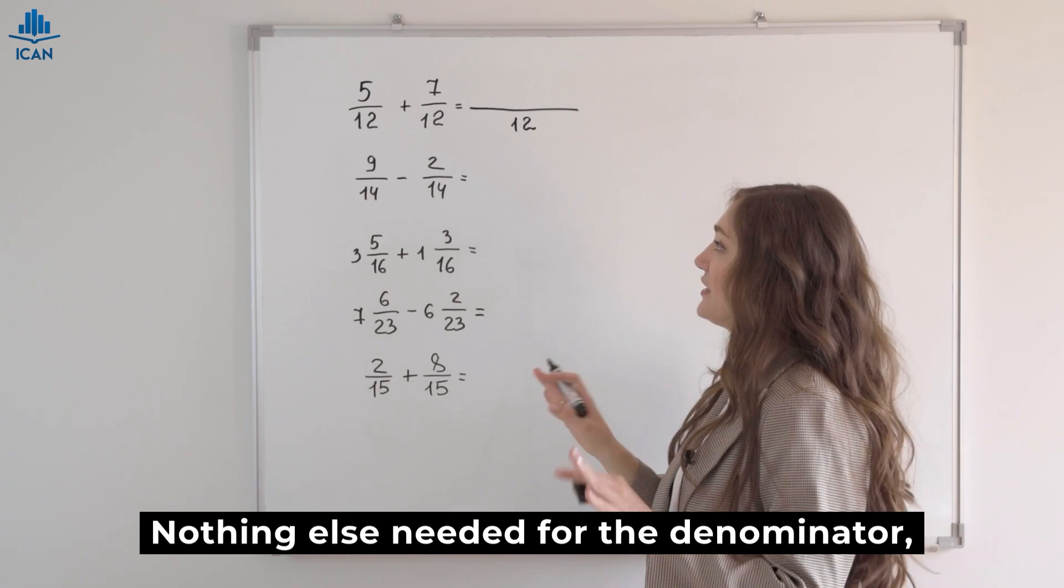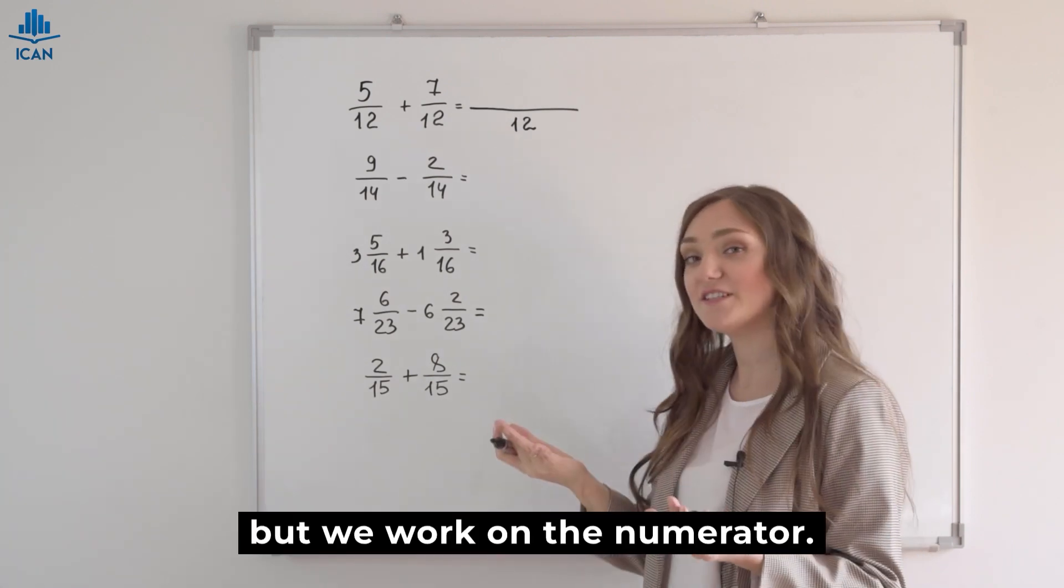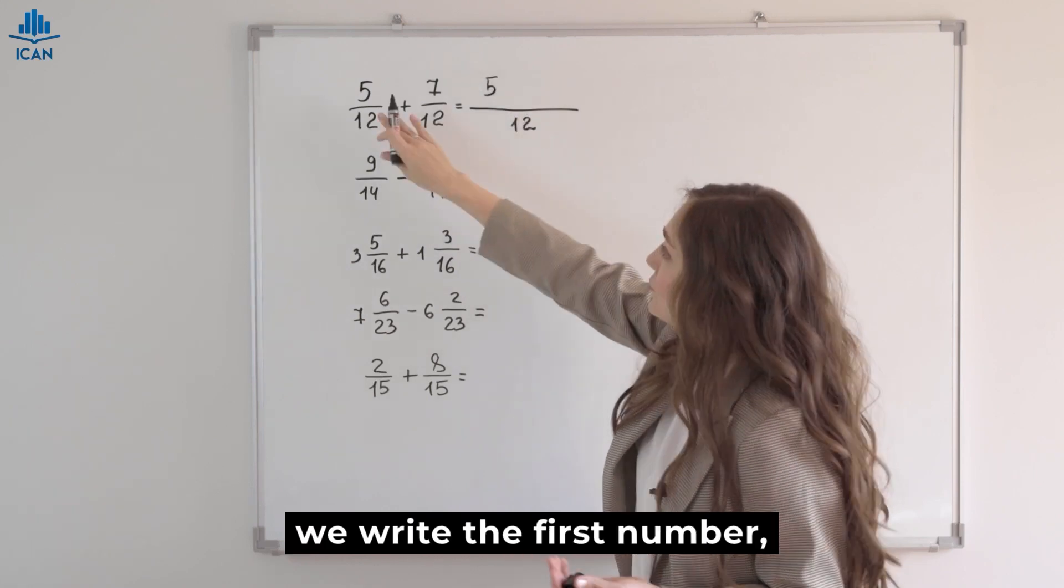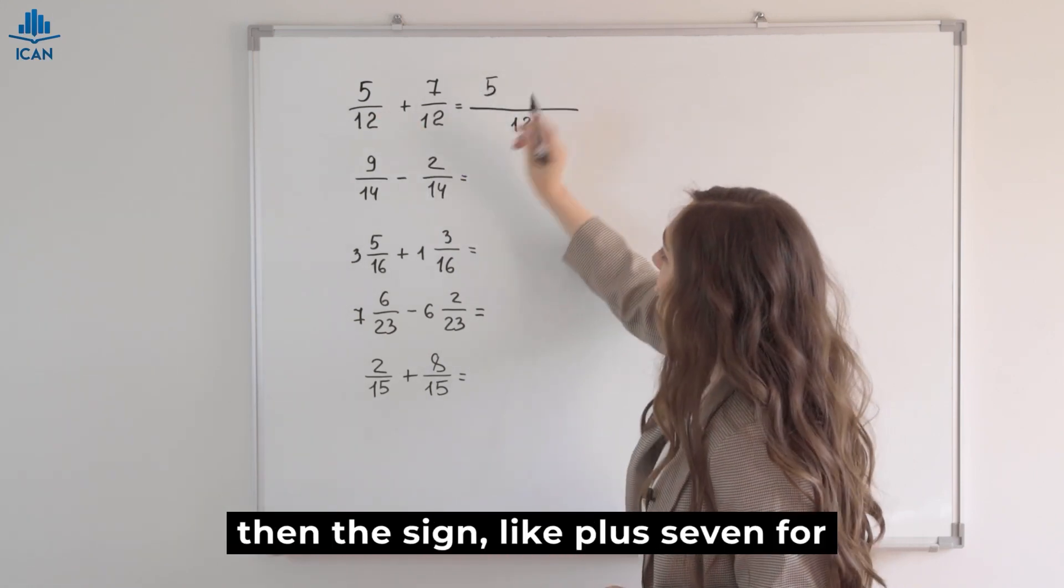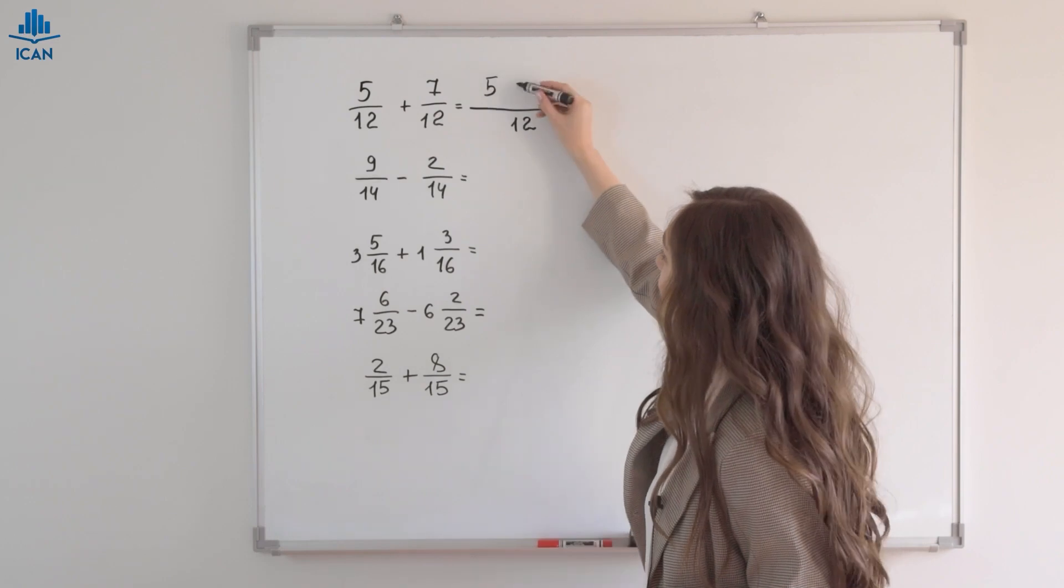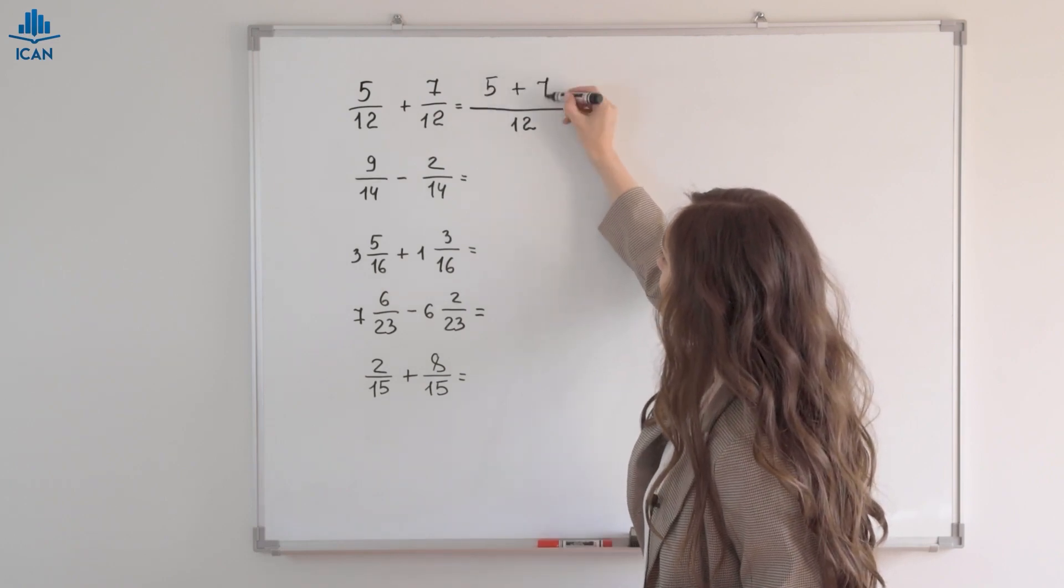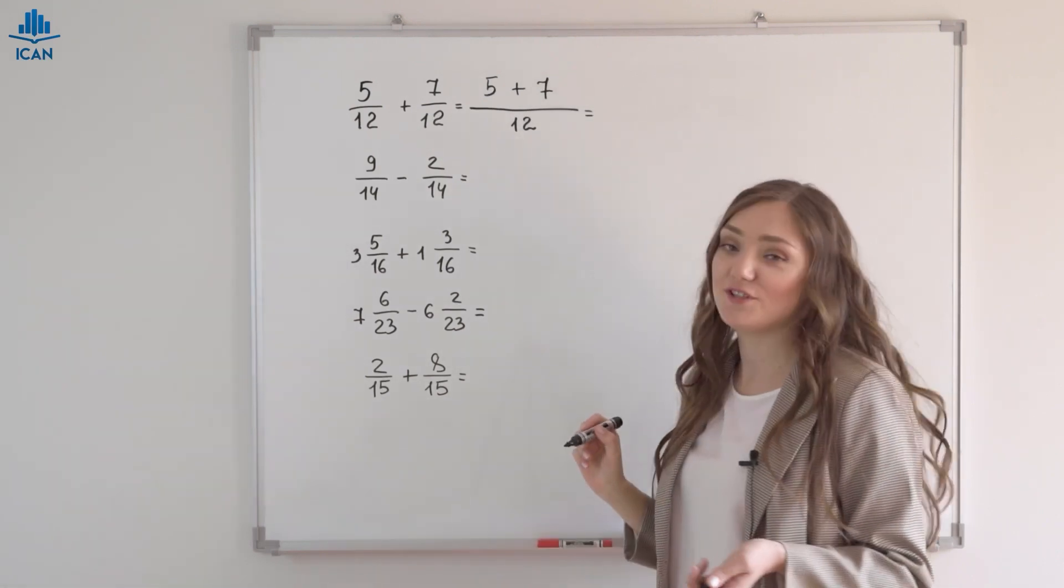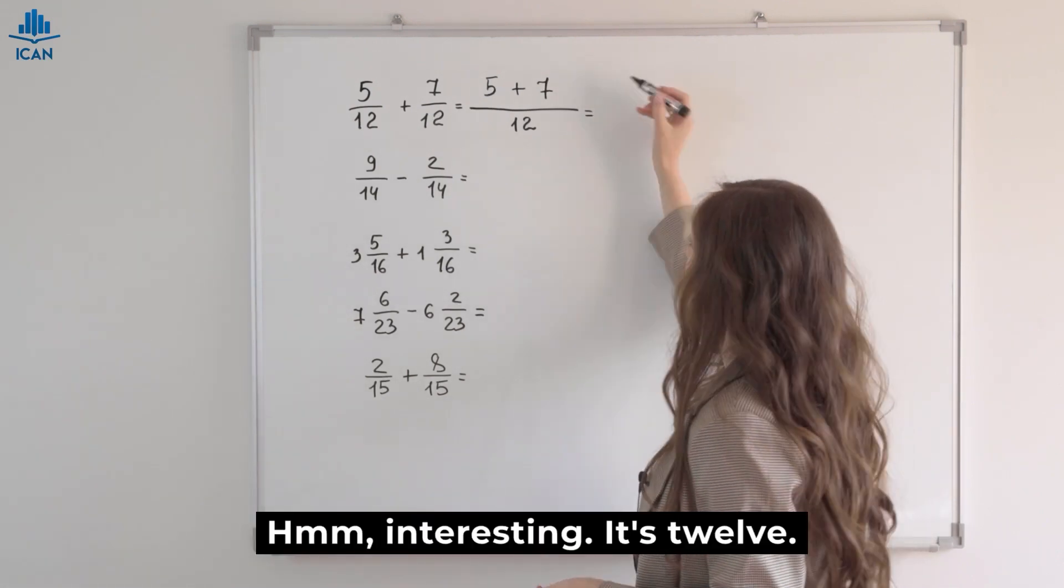Nothing else needed for the denominator, but we work on the numerator. In the numerator, we write the first number, then the sign, like plus 7 for addition. What's 5 plus 7? Interesting, it's 12.